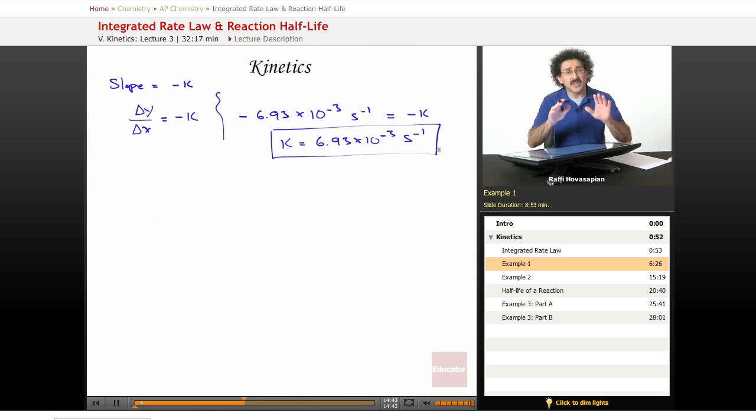So what we did: we were given kinetic data—time and concentration. We plotted time on the x-axis and the logarithm of the concentration on the y-axis. If you get a straight line, it's a first-order reaction. If you don't get a straight line, it's not a first-order reaction. So it works both ways. If you do get a straight line, the slope of that straight line is negative of the reaction constant, k.